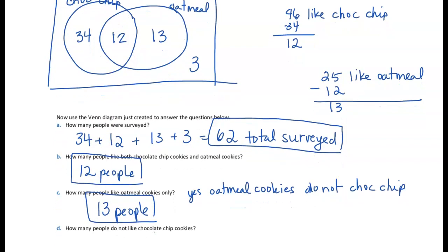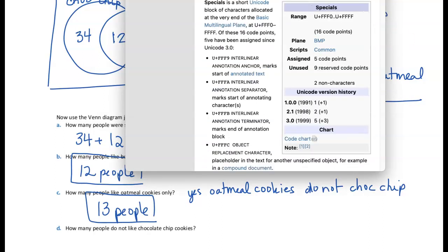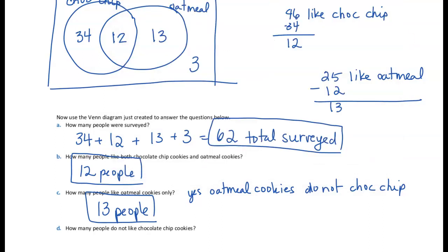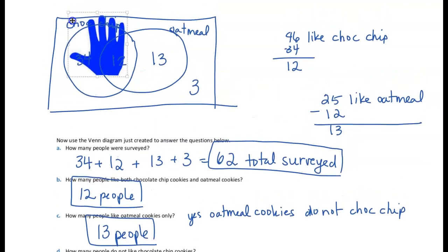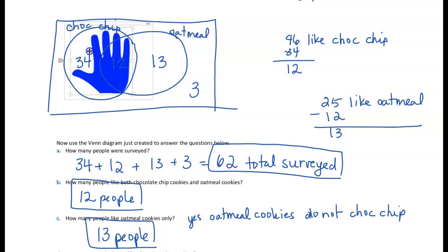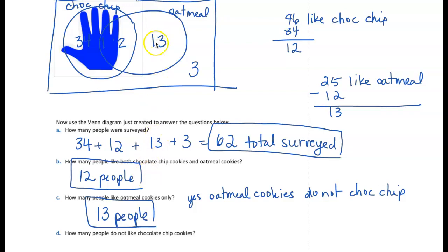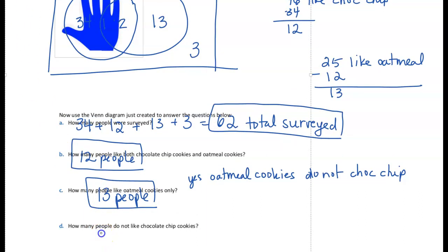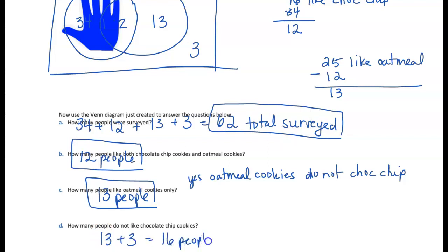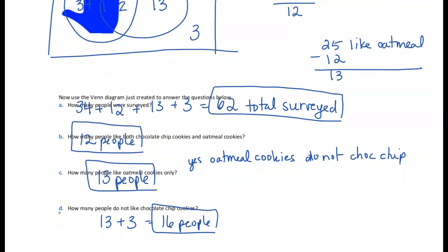Part D: How many people do not like chocolate chip cookies? Cover the chocolate chip cookie set and include everything not covered by that hand. The parts not covered are 13 on the right and 3 on the outside, giving us 16 people who do not like chocolate chip cookies.